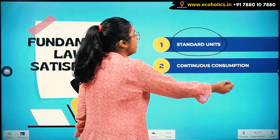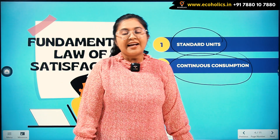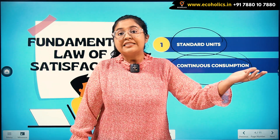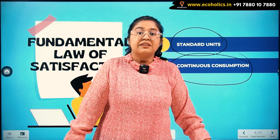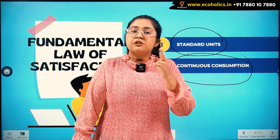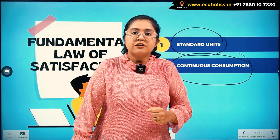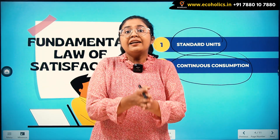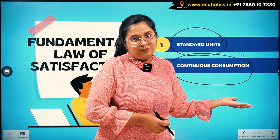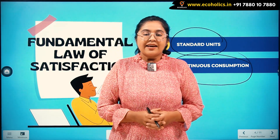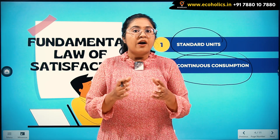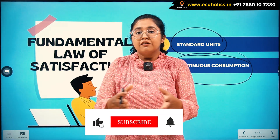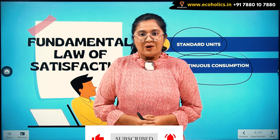The second important condition is that consumption needs to be continuous. You cannot eat one samosa today, a second samosa tomorrow, and a third the day after and claim there is diminishing marginal utility — that is not continuous consumption. Continuity means that after consuming one unit, you immediately consume the second unit, then the third, then the fourth. Only then can we apply the law. This is the whole context of the diminishing marginal utility. Stay tuned to Ecoholics.